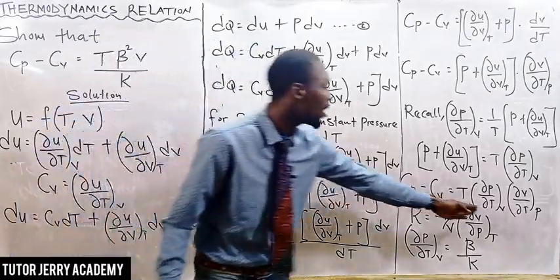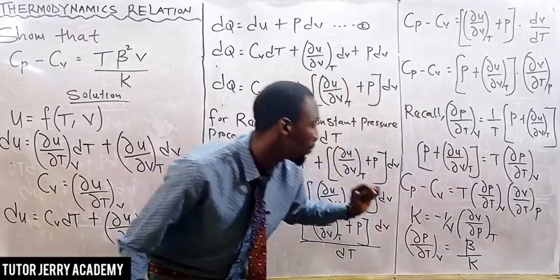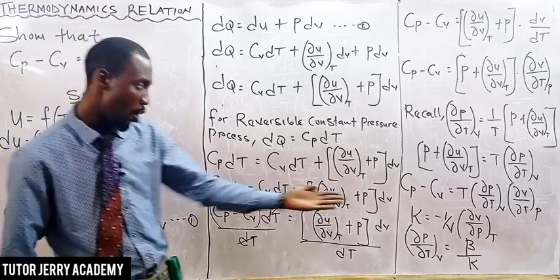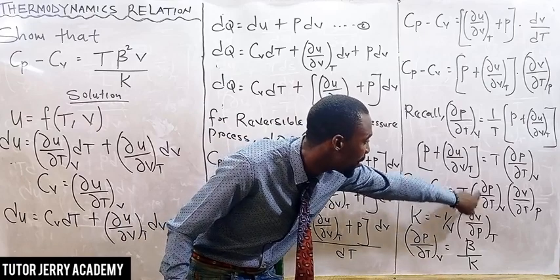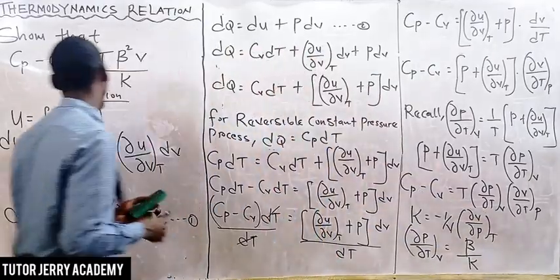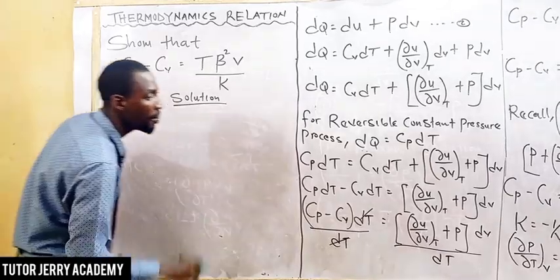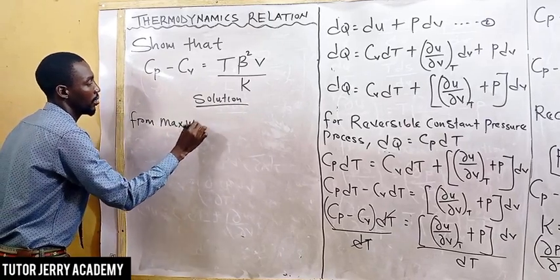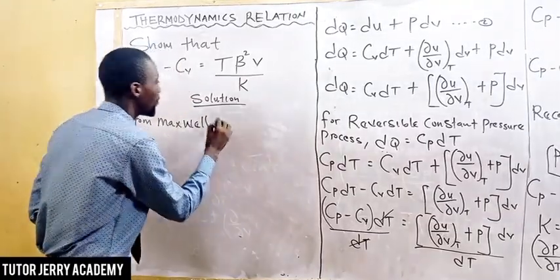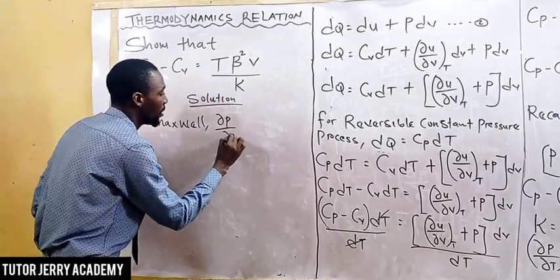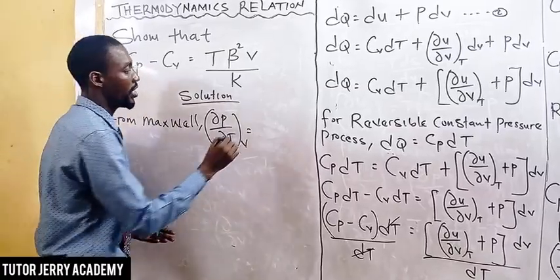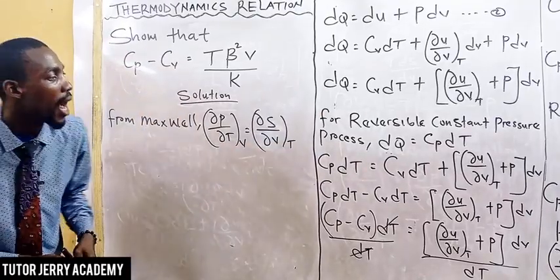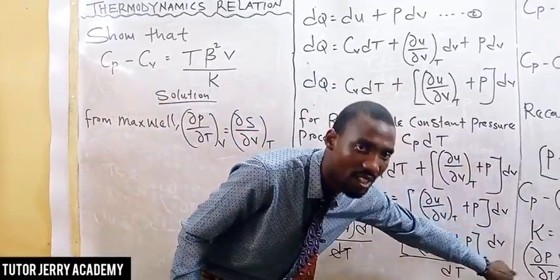Now if we look at this expression, we also recall from the Maxwell equation that the partial differentiation of P with respect to T, keeping V constant, equals the partial differentiation of S with respect to V, keeping T constant.